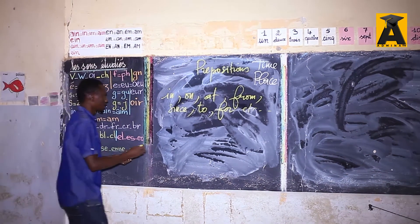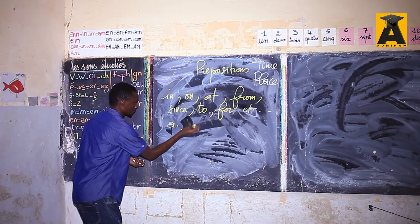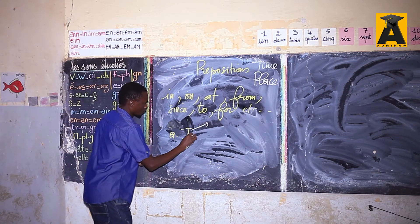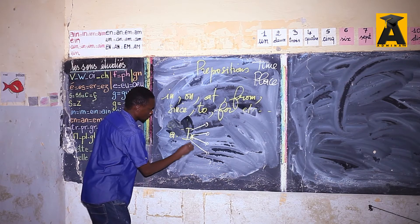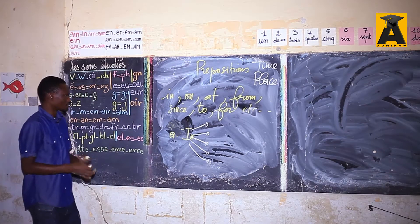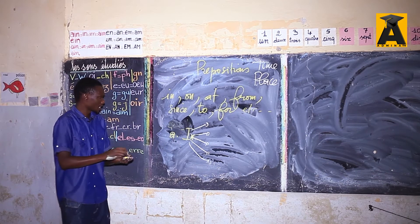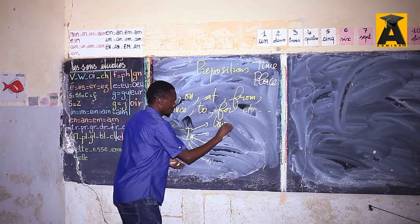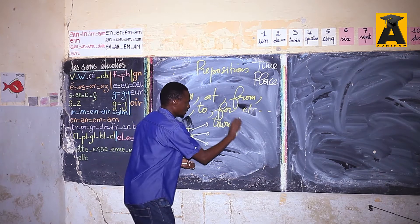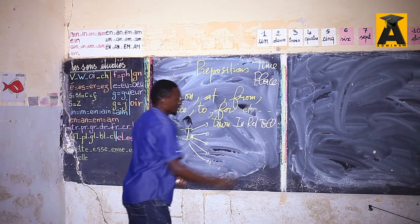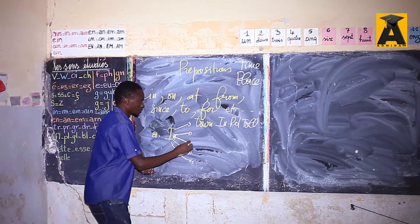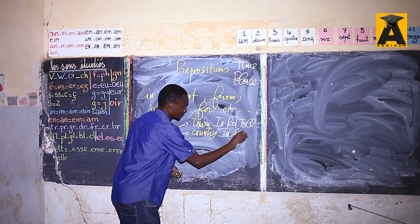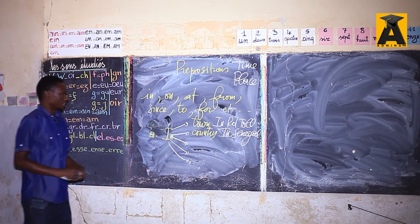First, we're going to tackle 'in'. So what does 'in' go with? The preposition 'in' is quite different from 'at' and from 'to'. I'm going to give you some examples. When you use towns or countries, for example, you say 'in' with cities. You can say: I live in Russia. You can also use it with countries — for example: I live in Senegal.